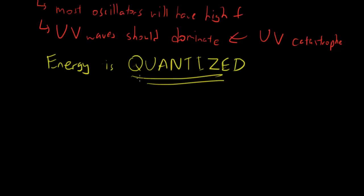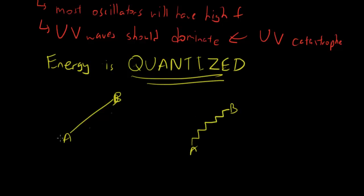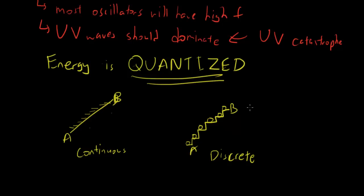To explain quantization: think about getting from the first floor to the second floor. One way is by a ramp — you can step anywhere you want on the slope, and that's continuous. Another way is by stairs — you can only step on specific spots. That discrete idea is basically quantization. You can only be at step one, step two, step three, not anywhere in between.